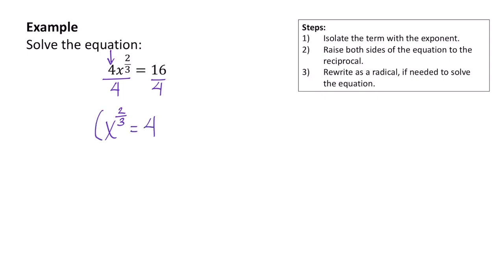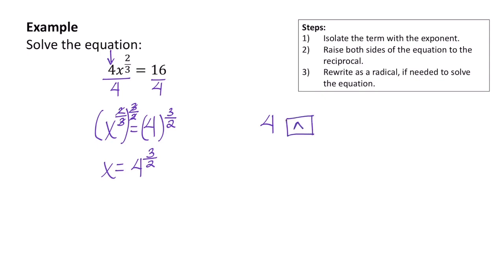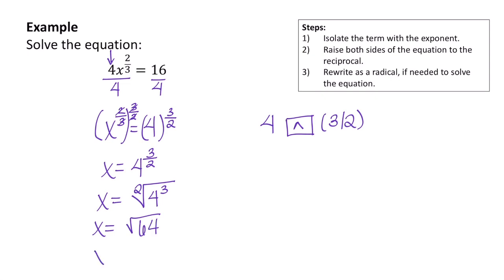We can now undo this exponent by raising both sides to the 3 over 2 power — that is the reciprocal. Notice on the left that everything cancels, so we're left with just x. So we have x equals 4 to the 3 over 2 power. You can do this on your calculator by typing 4 and then choosing the caret button and entering parentheses 3 over 2. Or you can do it by hand by rewriting this as a radical: denominator becomes index, numerator becomes power. That gives x equals the square root of 64, which is x equals 8.